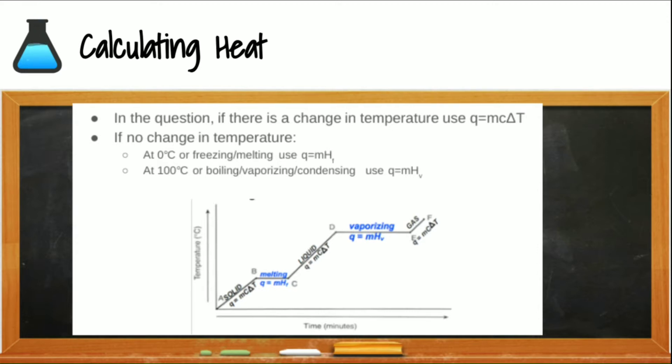And at the higher plateau, we will use the Q equals MH sub V, V meaning vaporization or gas. Again, on this plateau, we do not have the particles moving any faster. There is no temperature change. But instead, they are changing their position. They are moving further apart.